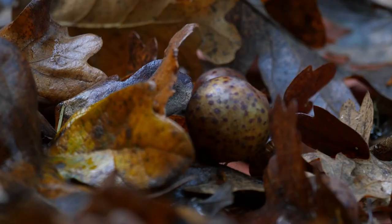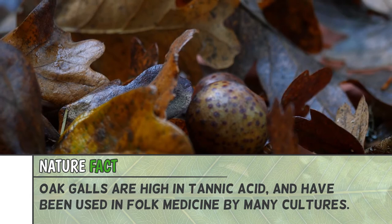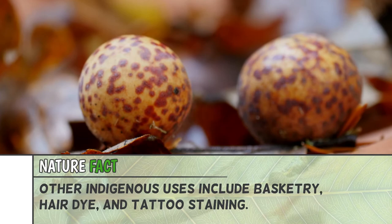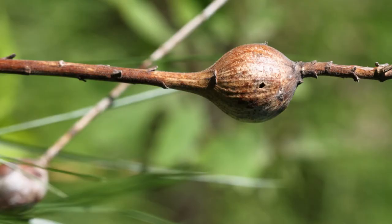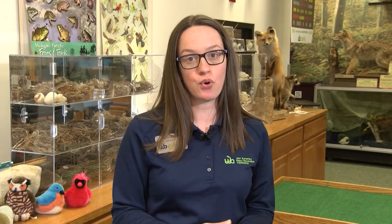You can find galls on trees, flowers, and bushes — they even grow on mushrooms sometimes. Here in North America, the most popular place to find galls is on oak trees. Another common gall that's easy to find if you're out in Michigan wandering in the prairies is the goldenrod gall, which grows on goldenrod.